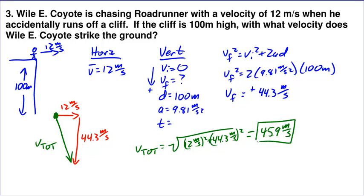Horizontally he's moving 12 meters per second, vertically he's moving 44.3 meters per second. Put those together — combine the vectors — for a total velocity of 45.9 meters per second.